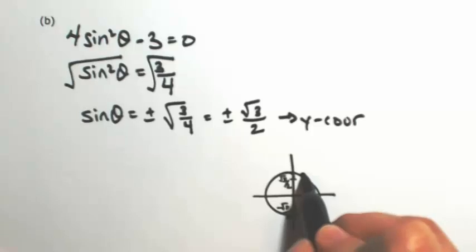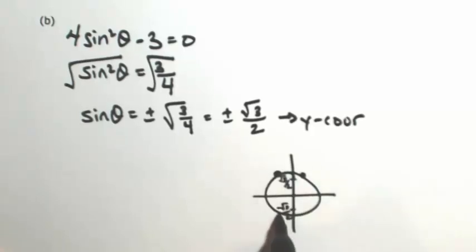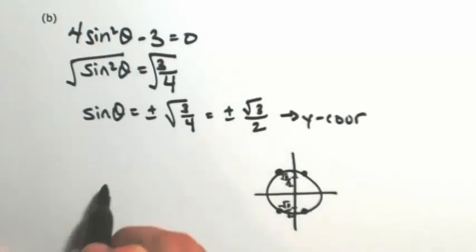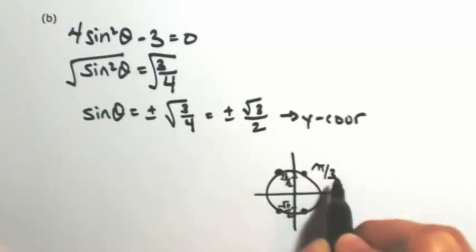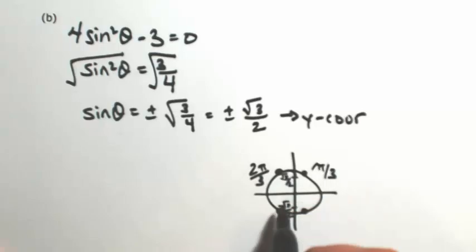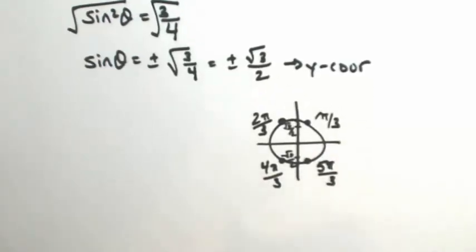So these are going to take place at the thirds. Again, there's one in each quadrant. So we have pi over 3, we have 2 pi over 3, 4 pi over 3, and 5 pi over 3. Okay, so that means theta has 4 answers.